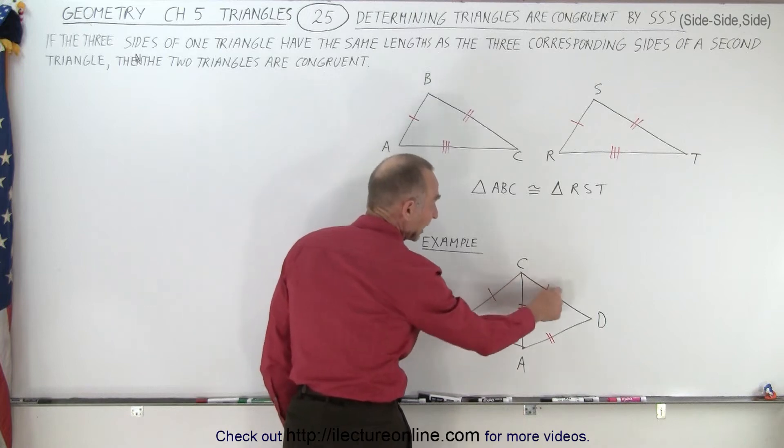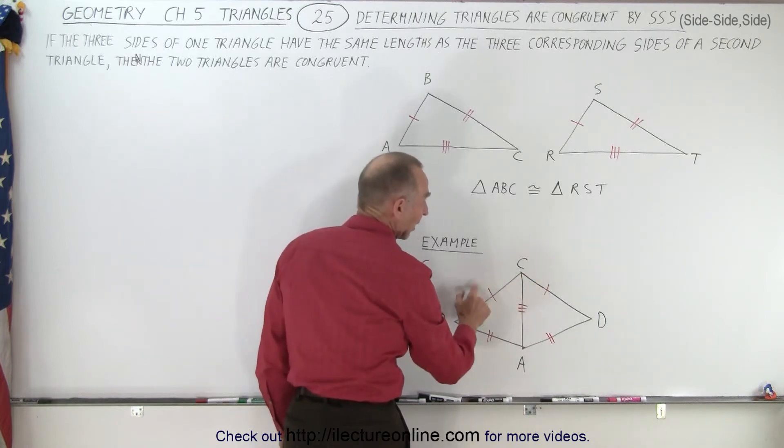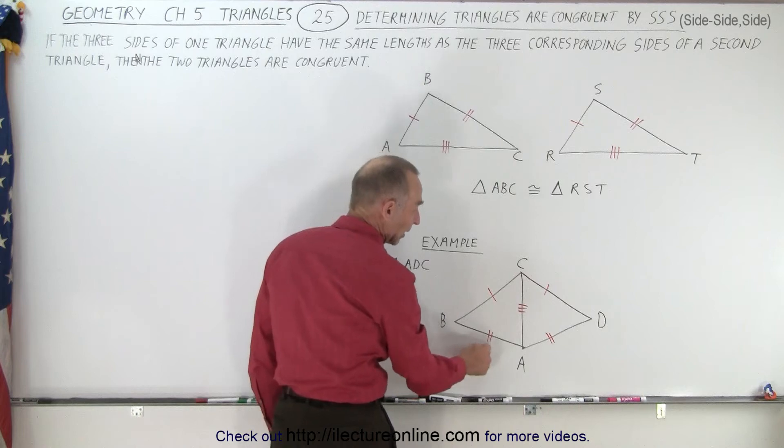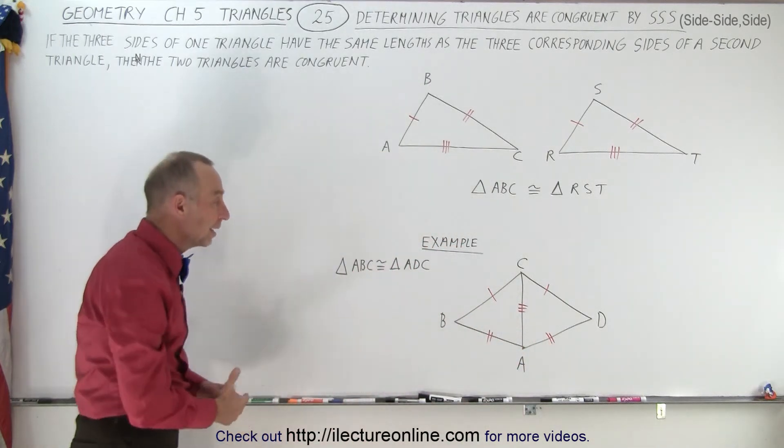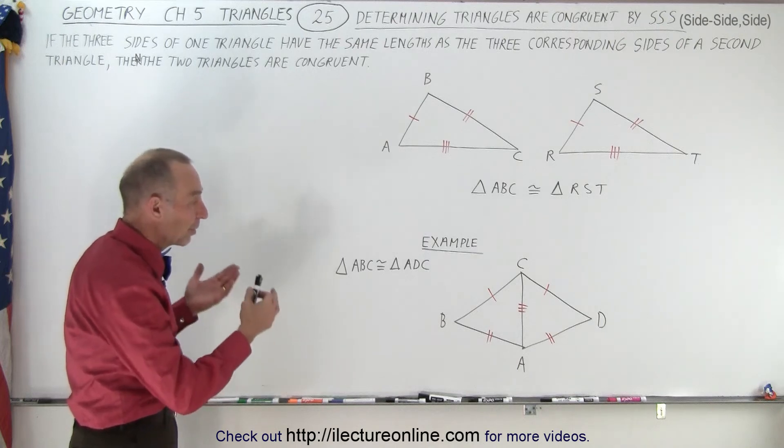It's also indicated that these two corresponding sides have the same length, and these two corresponding sides have the same length. So by definition, if the lengths of the three sides of one triangle are equal in length to the three corresponding sides of another triangle,